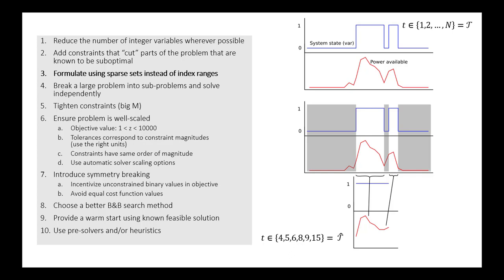So the third approach here is to formulate what we'll call sparse sets instead of index ranges. The example I've shown is our power production schedule where we have some system state that's monitored or dictated by the variable y sub t. In the previous example, we've specified y sub t to be such that t can take any value in the range from 1 to n, where n is the length of the horizon. So our set script t is 1, 2, 3, so on, up to n.